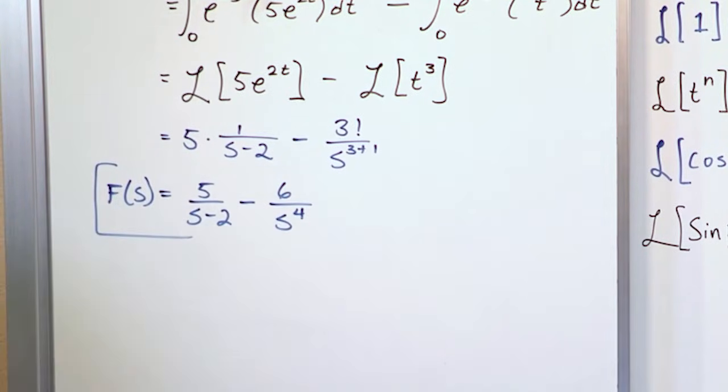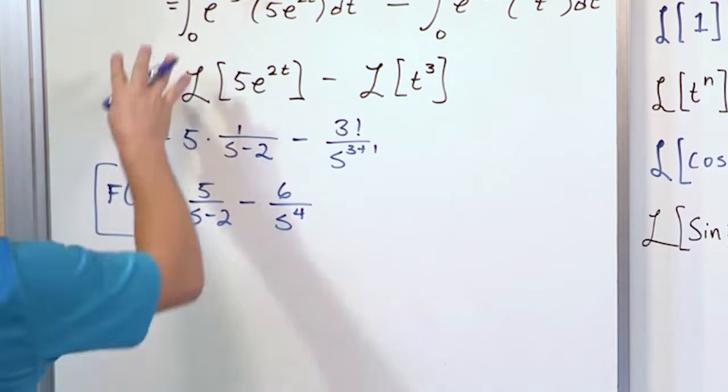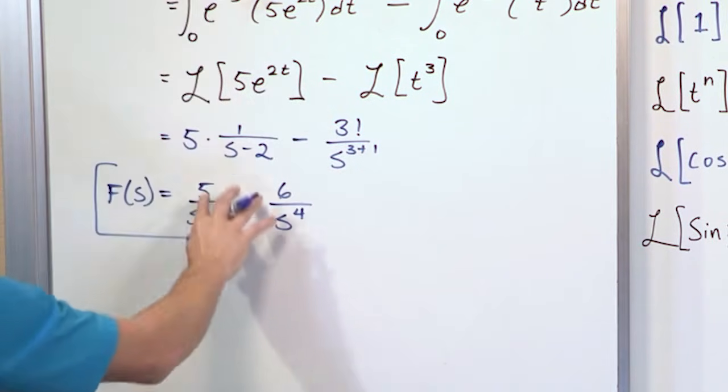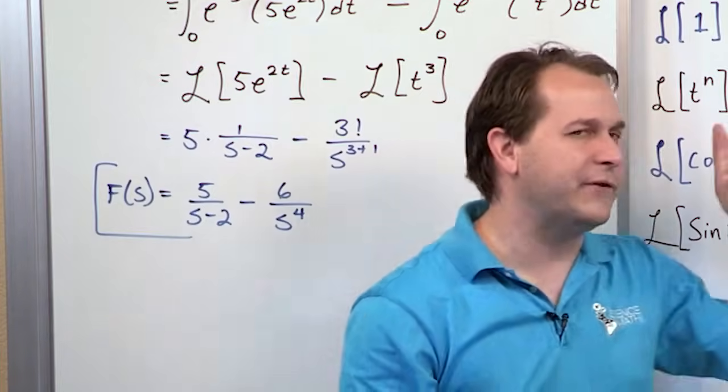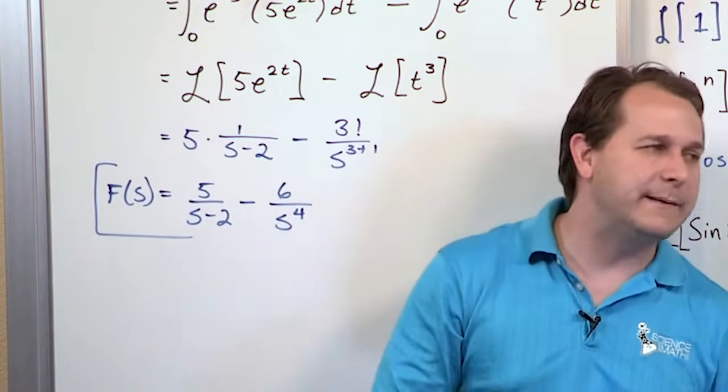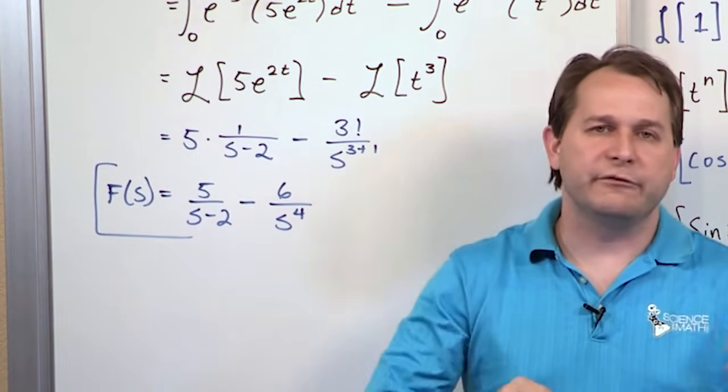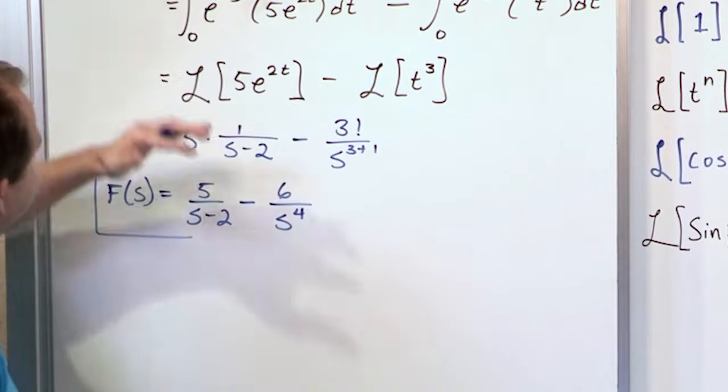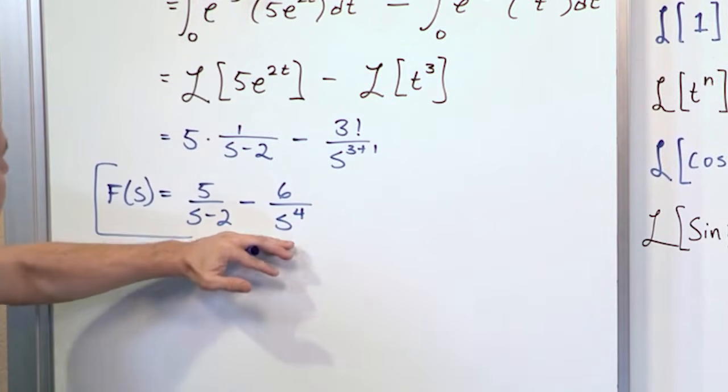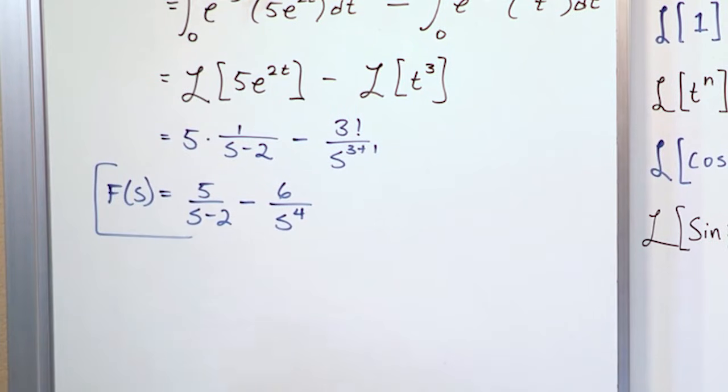Then we subtract off, we say, what's the Laplace transform of t cubed? We go here, we say that it's going to be 3 factorial s to the n plus 1, which would be s to the fourth power. So we say, just to show it, we say 3 factorial s to the 3 plus 1. I don't like to do too many things in one step, so I like to show everything. So what I would have here is 5 over s minus 2 minus 3 times 2 is 6 times 1 is still 6 over s to the fourth power.